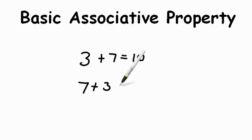Okay, let's try one more. If I gave you the number 3 plus 7, we know that 3 plus 7 equals 10. Using the basic associative property, what can you also prove? That's right, that if 3 plus 7 equals 10, that 7 plus 3 must also equal 10.